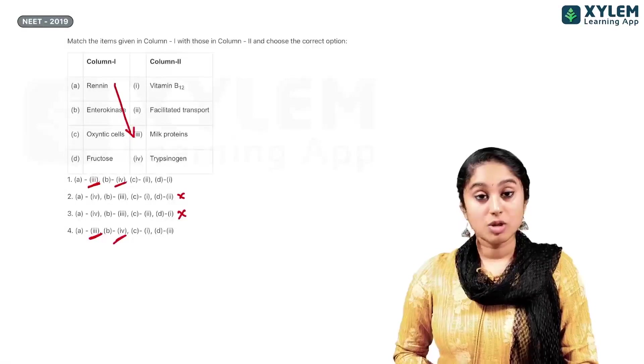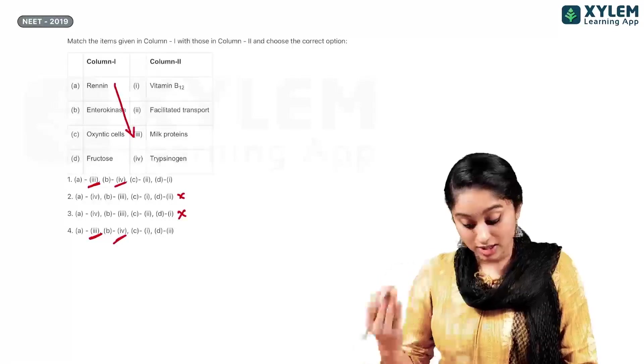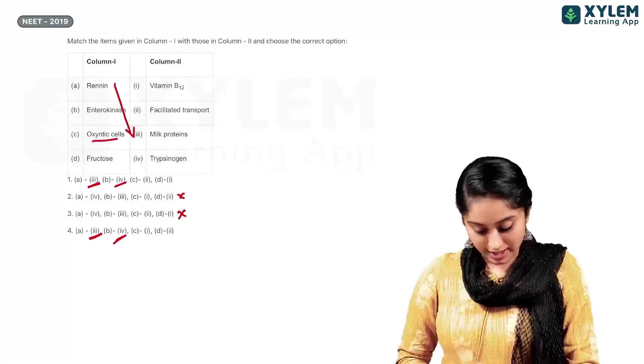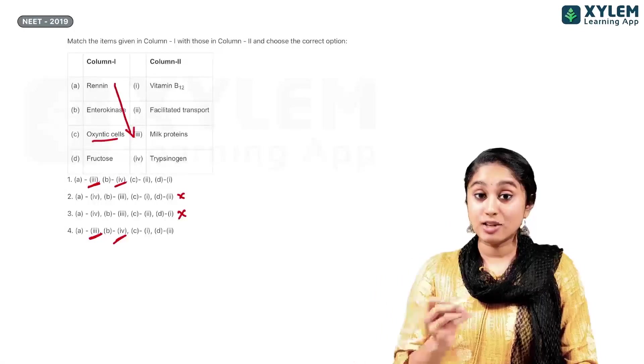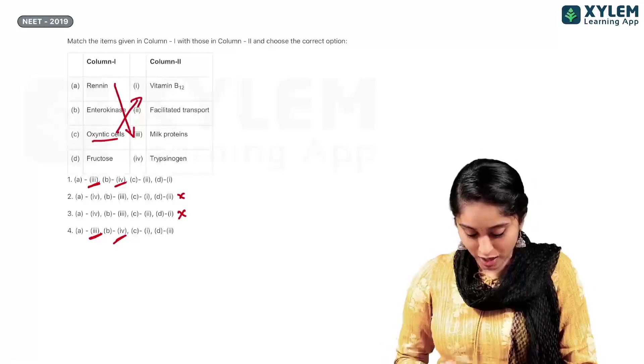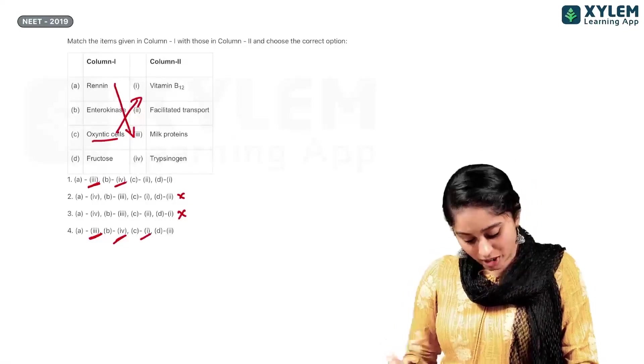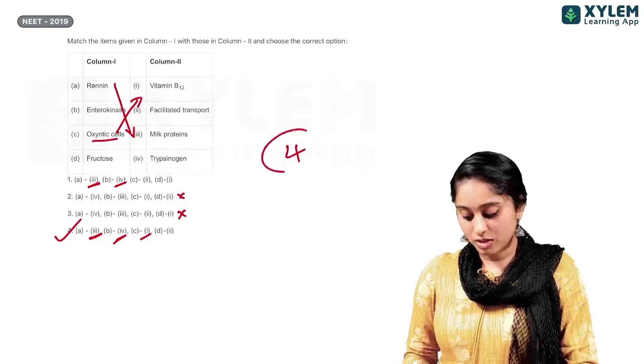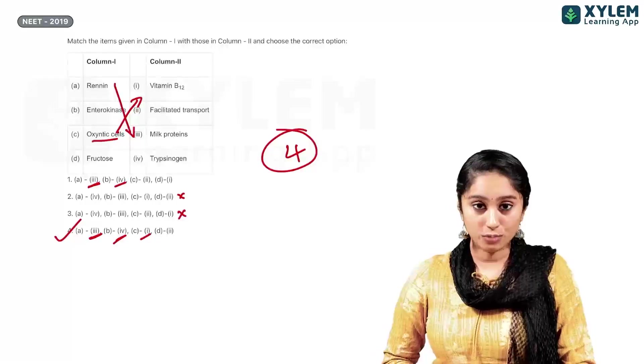Now, there are two options. B is 4. So, now, I am going to C. C, we have oxyntic cells. Now, oxyntic cells is involved in, it is essential for the absorption of vitamin B12. So, that means, C to 1 is one option. So, my correct option is, 4.